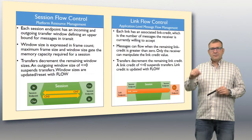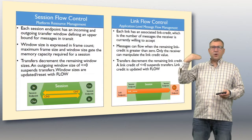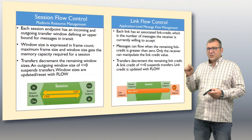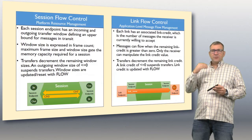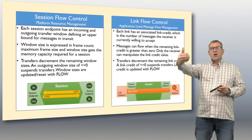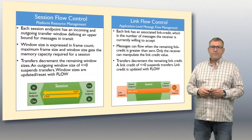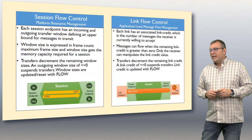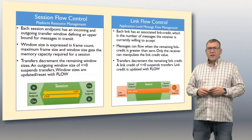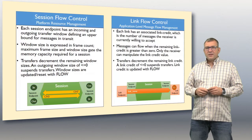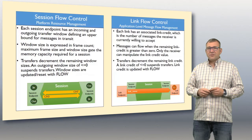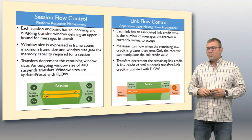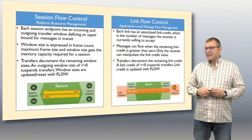Link flow control: each link has associated link credit, which is booked using the flow frame over on the sender side. When the remaining link credit is greater than zero, messages can flow, and only the receiver can manipulate that link credit value — so the receiver is in control of booking and subtracting that link credit.